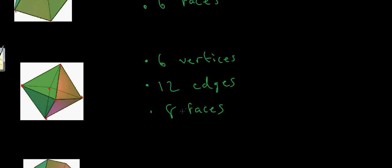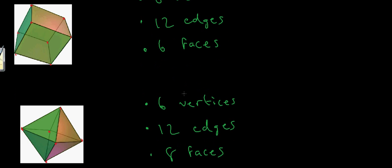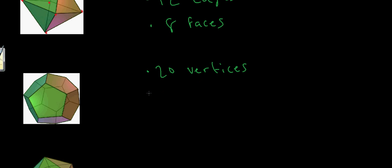You might notice a bit of a pattern developing — there's a little bit of a relationship between the cube and the octahedron, and some of these numbers seem to be repeating themselves. There's a reason for that, which we'll get to later. But now let's look at a slightly more complicated example: this is the dodecahedron, which I personally always have a hard time visualizing. It has a total of 20 vertices — arranged in four distinct levels each with five vertices — 30 edges, and 12 regular pentagon faces.